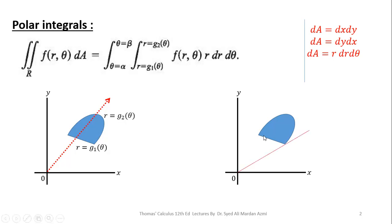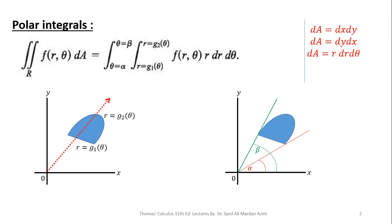To calculate the limits of θ, we will measure the point or boundary through which our region starts in the counterclockwise direction. Moving counterclockwise, the starting point of our region gives us an angle with the positive x-axis; if this angle is α, it provides the lower limit of θ. Similarly, the ending boundary in the counterclockwise direction gives us an angle with the positive x-axis, which provides the upper limit of θ.